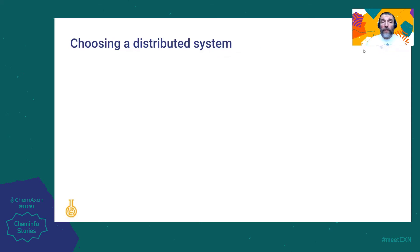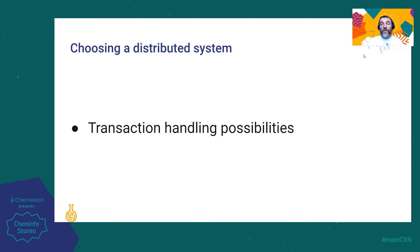So, the first step was choosing a distributed system. We evaluated many of them and checked how they handle transactions. For example, how can we consistently import chemical structures together with some extra data?